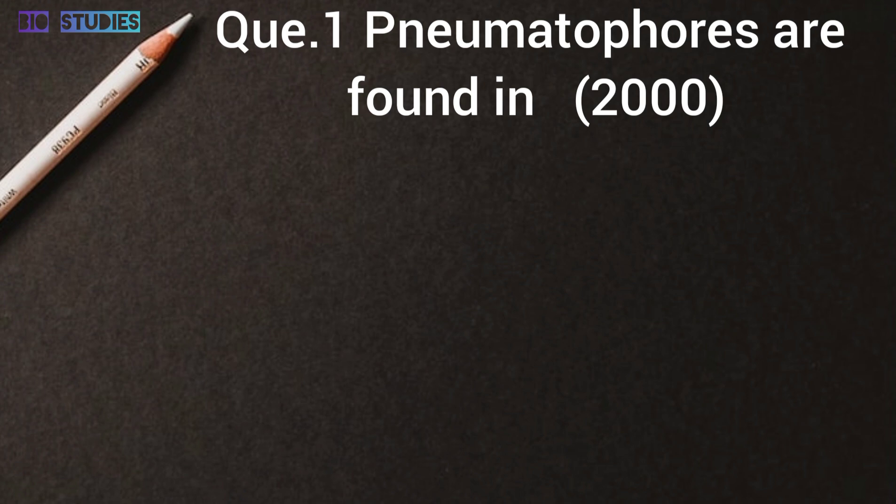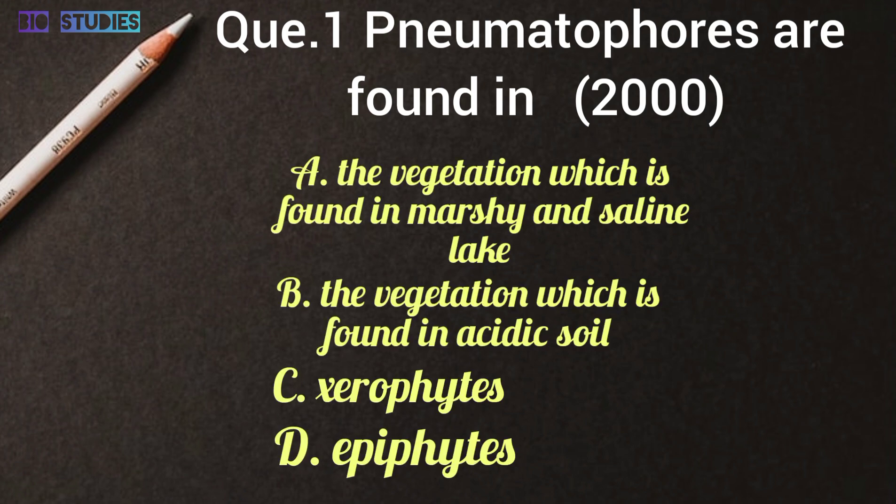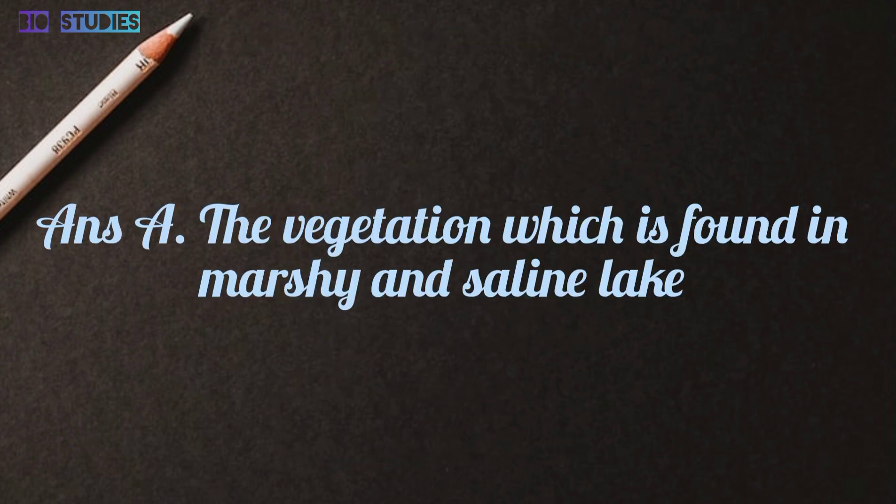Our first question is: pneumatophores are found in — options are: vegetation which is found in marshy and saline areas, vegetation which is found in acidic soil, xerophytes, or epiphytes. And the answer is A: vegetation which is found in marshy and saline areas.